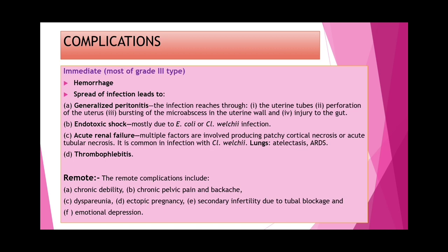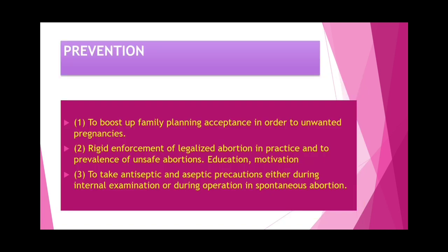Remote complications include chronic debility, chronic pelvic pain and backache, dyspareunia, ectopic pregnancy, secondary infertility due to tubal blockage, and emotional depression. Prevention: promote family planning to avoid unwanted pregnancies, enforce legal abortion practices, reduce unsafe abortion prevalence through education, and ensure antiseptic and aseptic precautions during internal examination and operations.